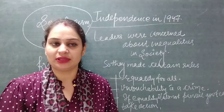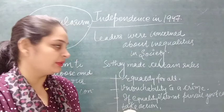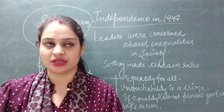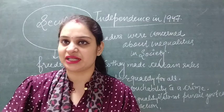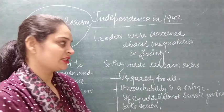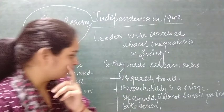When India got independence, after three years we got our constitution. The leaders of independent India wanted equality in the society, so they made certain rules in written form known as the constitution. The basic idea was that every citizen would get equal importance. The second rule was that untouchability is a crime — anyone found following the practice of untouchability would be considered a criminal. The third rule was that if equality does not prevail, the government can take action.